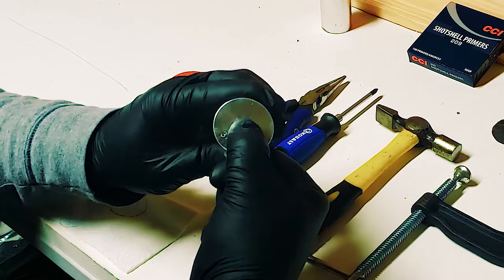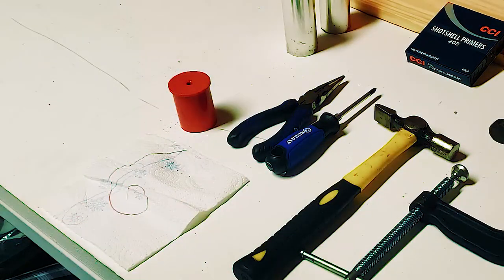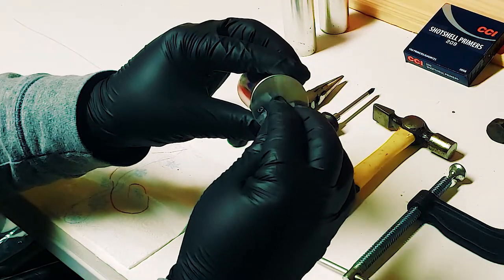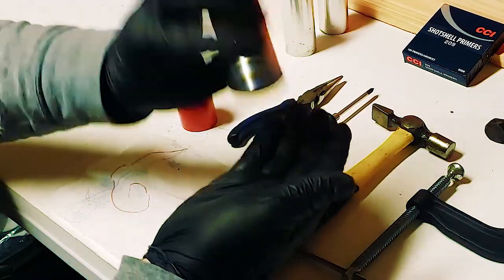If it fits snug, you're good to go. Give it a few shakes to ensure it stays in place. However, if you insert the primer and it shakes out, you need to use a spot of crazy glue, hot glue, or the easiest method: a paper towel.